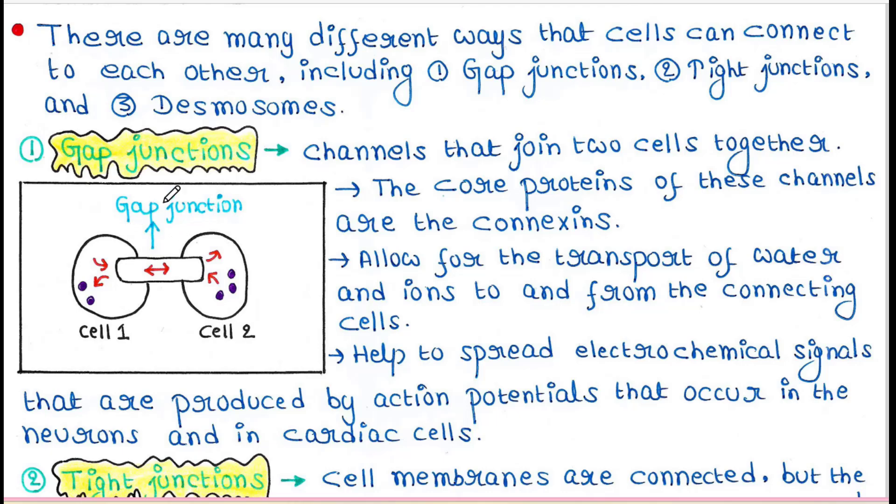Gap junctions are made up of connexin proteins. They allow for the transport of water and ions to and from the connecting cells.